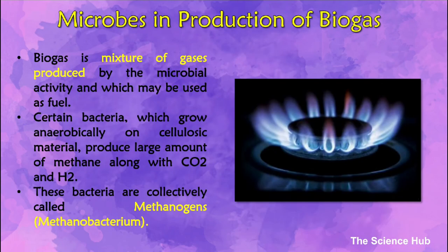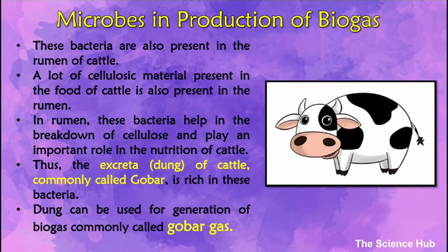Microbes in production of biogas — biogas is a mixture of gases produced by microbial activity that can be used as fuel. Certain bacteria that grow anaerobically on cellulosic material produce large amounts of methane along with CO2 and H2. These bacteria are collectively called methanogens, that is Methanobacterium. They are also present in the rumen of cattle, where large amounts of cellulosic material are present in their food. These bacteria help in the breakdown of cellulose and play an important role in the nutrition of cattle. Thus, excreta of cattle, commonly called dung or gobar, is rich in these bacteria.